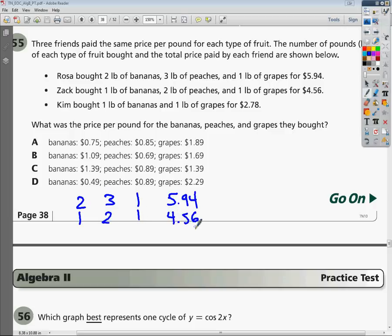Kim's, you have to be a little bit more careful, because they give you pounds of bananas, and she bought pounds of grapes, but she didn't buy any peaches, so I need to put a zero there. And then she paid $2.78. So what I'm going to do is set this up as one single matrix.